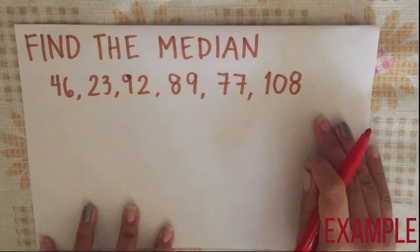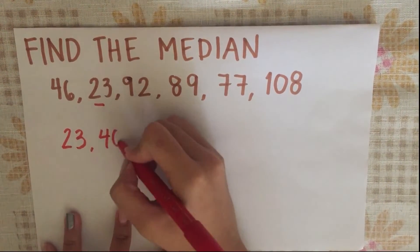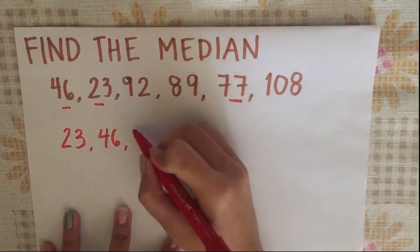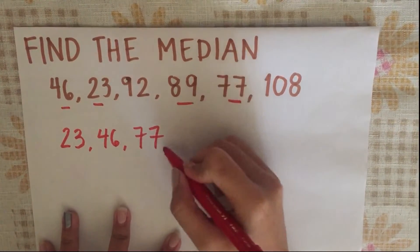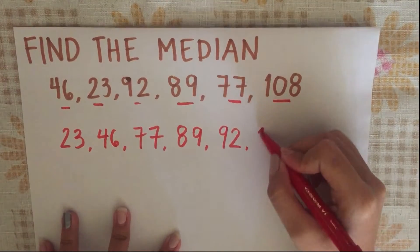Again, the first step in finding the median is to arrange the given values in ascending order. For this sample, the order will be 23, 46, 77, 89, 92, and 108.